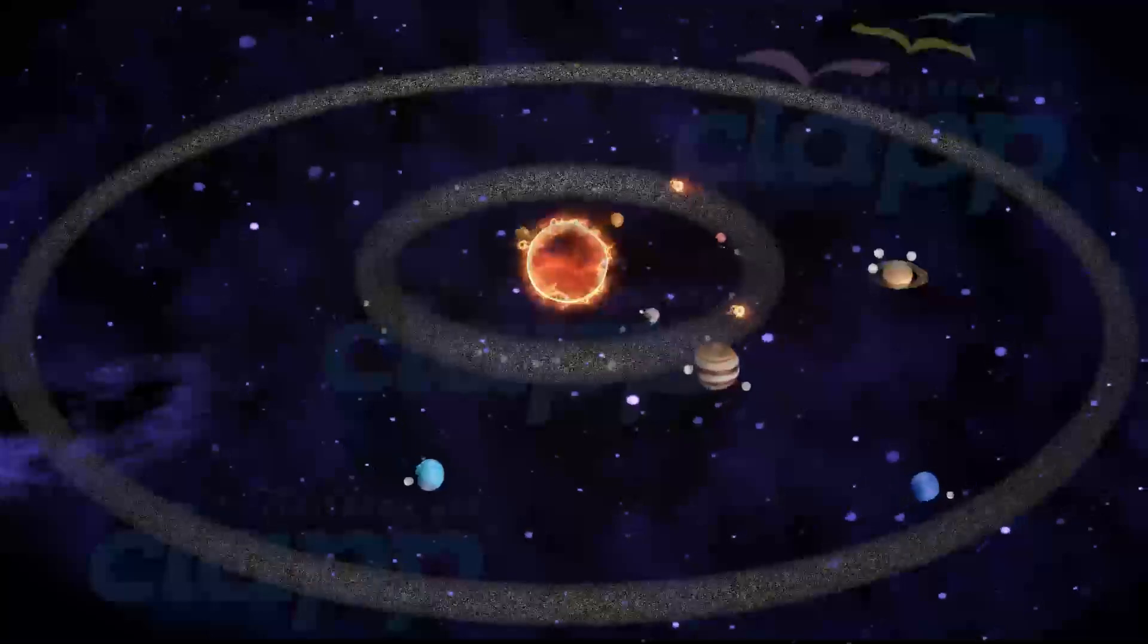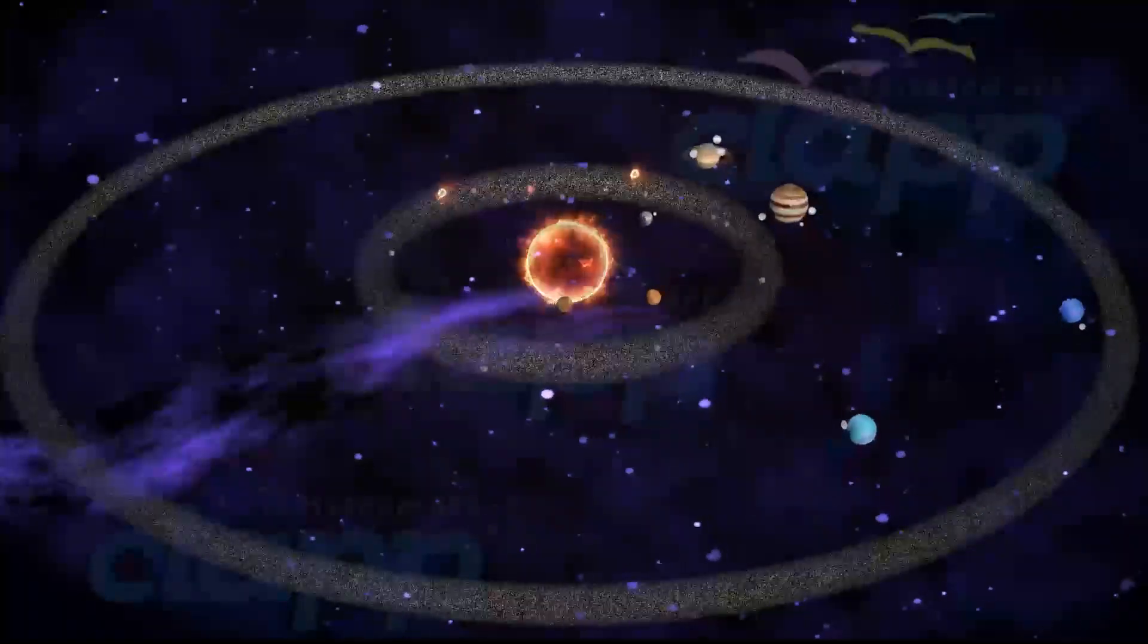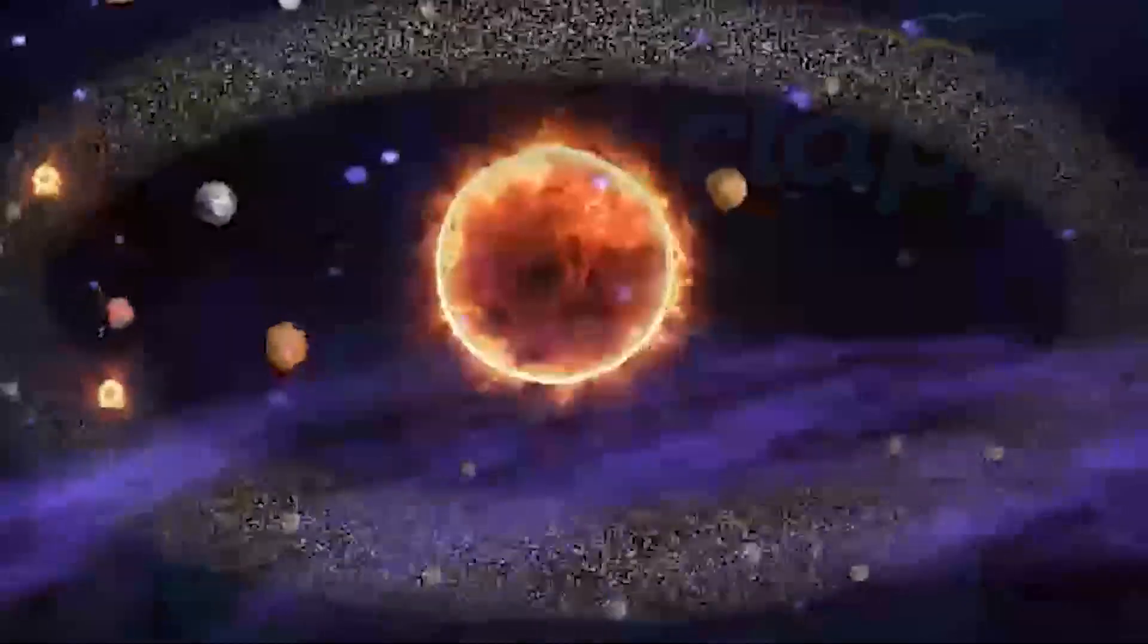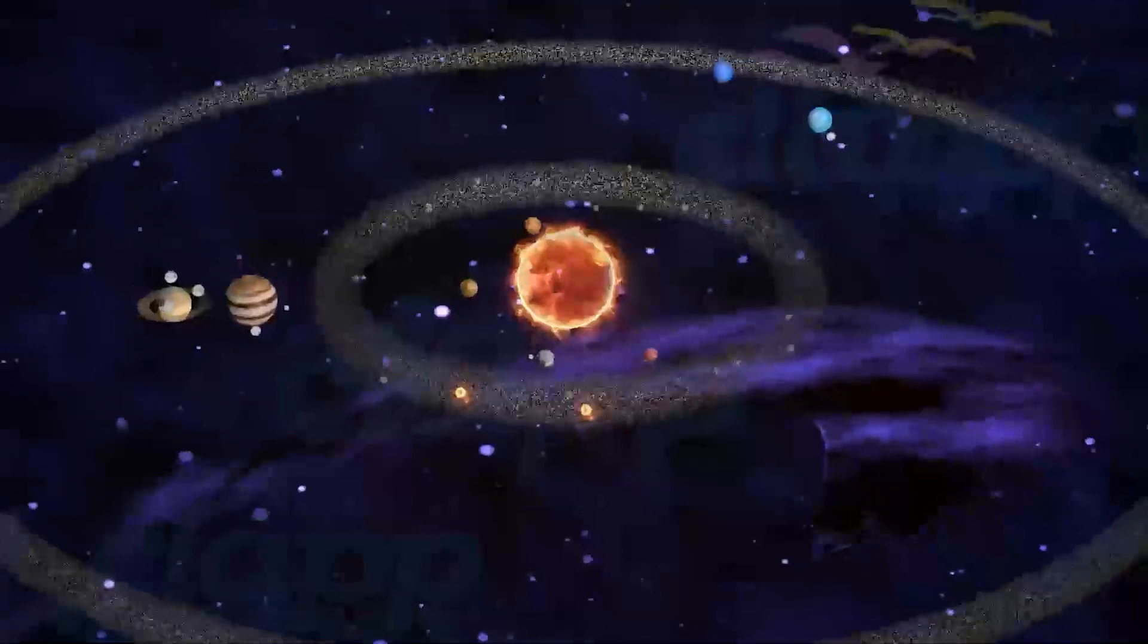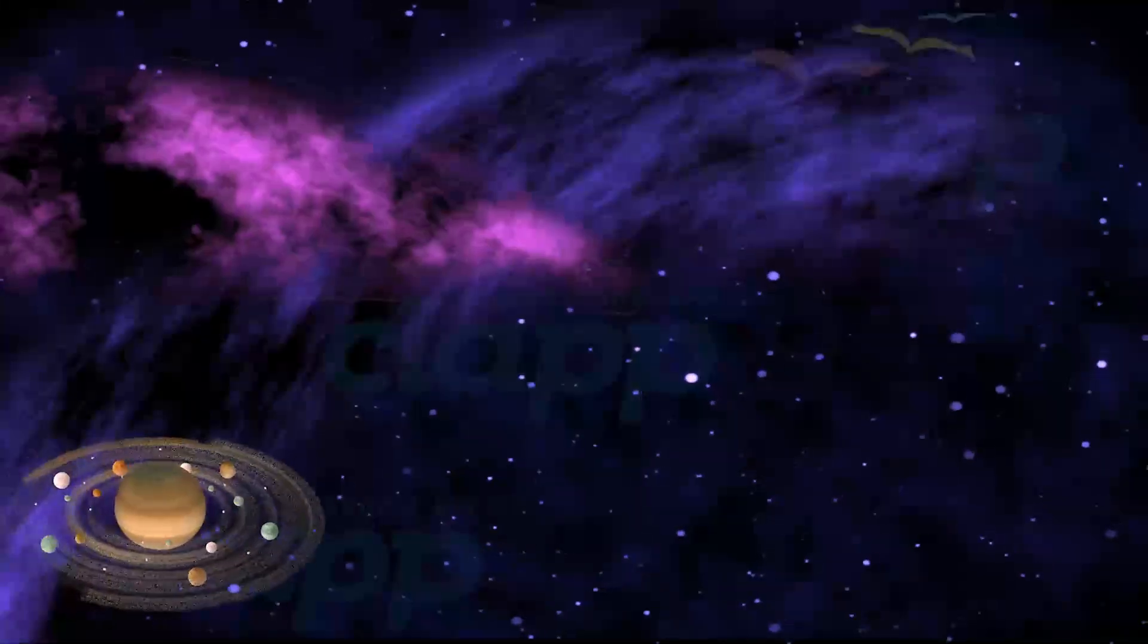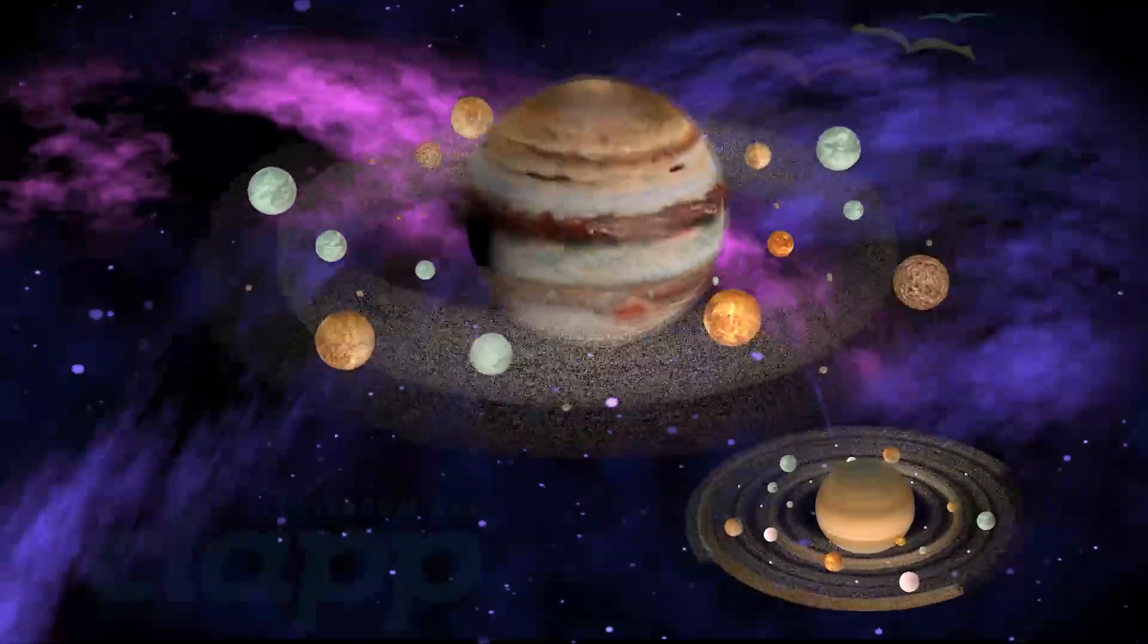The solar system is the gravitationally bound system of the sun and the objects that orbit it. Primarily, the solar system consists of the sun and eight planets orbiting around the sun, and the satellites orbiting these planets.